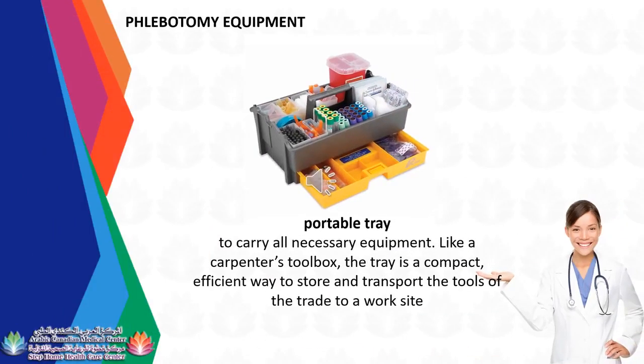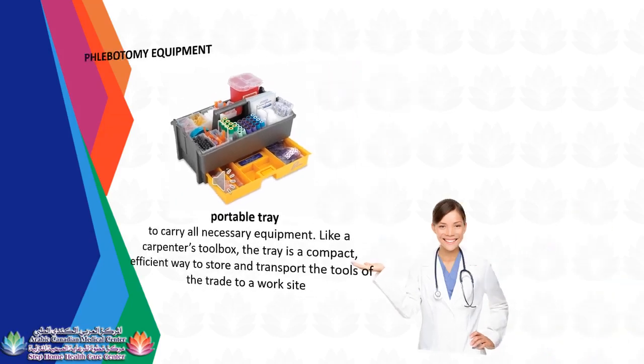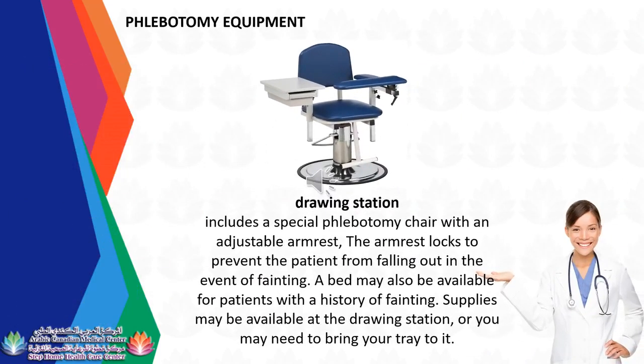Phlebotomy Equipment — Portable Tray: Used to carry all necessary equipment. Like a carpenter's toolbox, the tray is a compact, efficient way to store and transport the tools to a worksite. Drawing Station: Includes a special phlebotomy chair with an adjustable armrest. The armrest locks to prevent the patient from falling out in the event of fainting. A bed may also be available for patients with a history of fainting. Supplies may be available at the drawing station, or you may need to bring your tray to it.